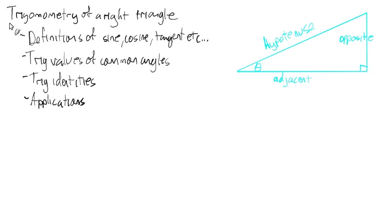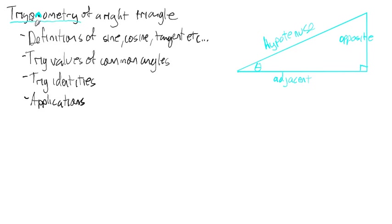Trigonometry — 'trig' comes from 'triangle,' and '-nometry' means measurement. So trigonometry is the measuring of triangles. When we measure triangles, we take the sides and make ratios out of them. That's what all of these trig functions, or values, are.